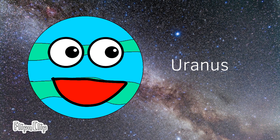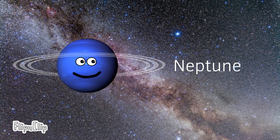I have 27 moons. I'm Uranus, Uranus. I am made of gas. I'm Neptune, Neptune.